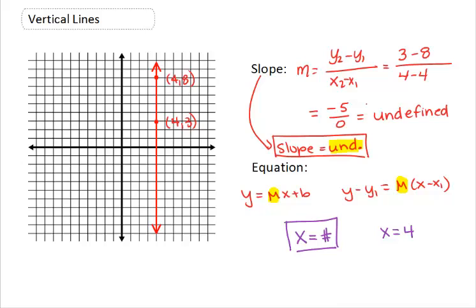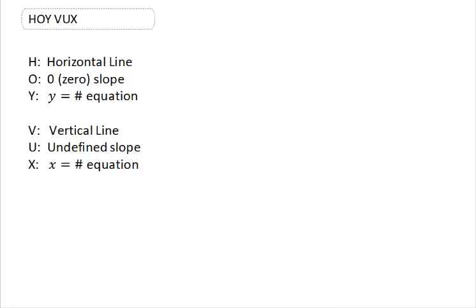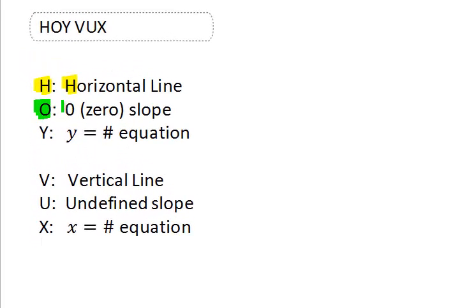There is a way to remember how horizontal and vertical lines work, and that's with the acronym HOY VUX: H-O-Y-V-U-X. The first three letters stand for horizontal lines. H for horizontal lines, O to tell us we have zero slope, and Y to tell us that our equation is y equals a number. VUX, the second part. V stands for vertical line, U tells us we have undefined slope, and X tells us our equation is x equals a number.